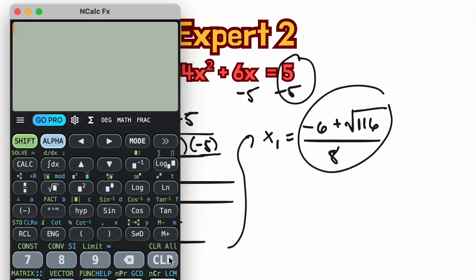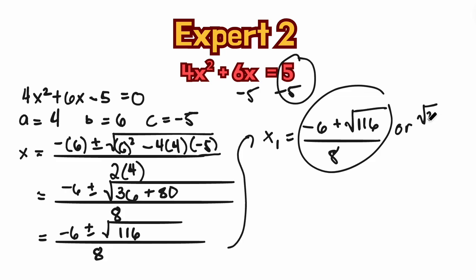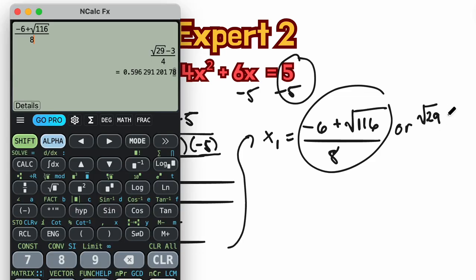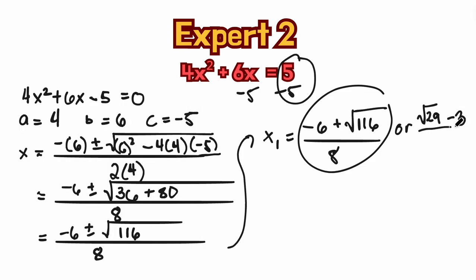So we have the fraction negative 6 plus square root of 116 over 8. So the other form would be like this, square root of 29 minus 3 all over 4. The answer can be like this, square root of 29 minus 3 all over 4.